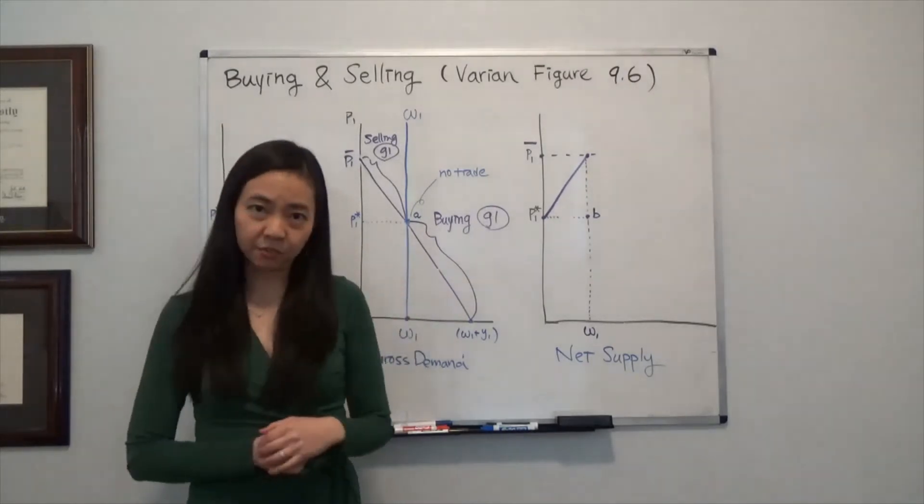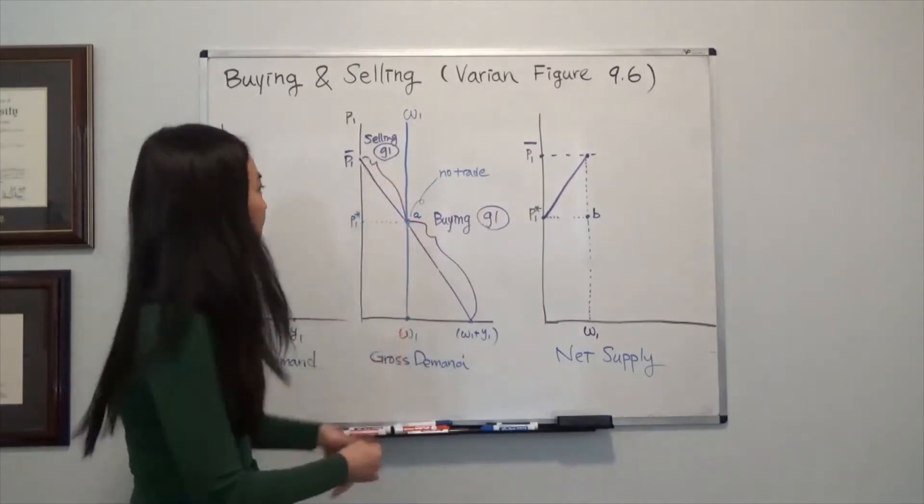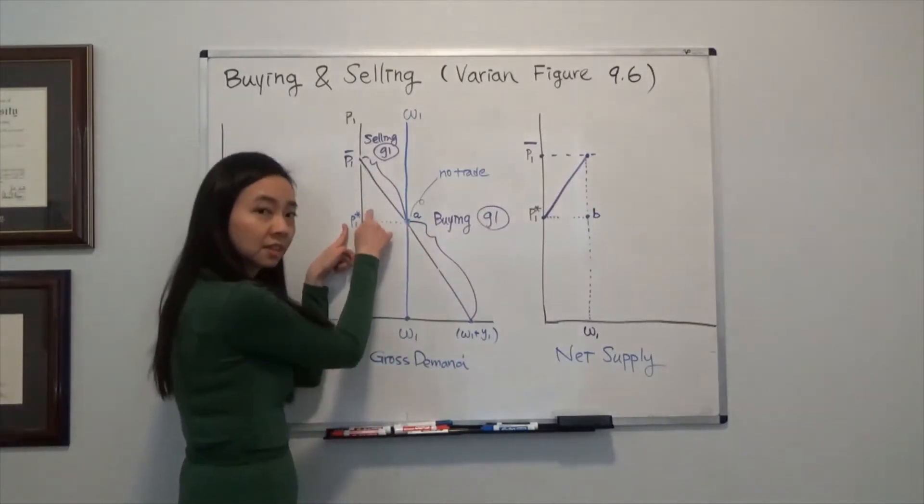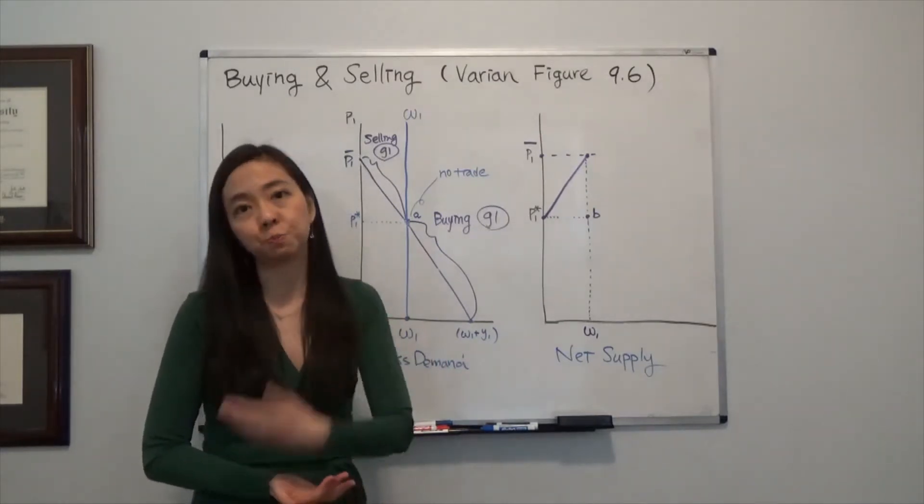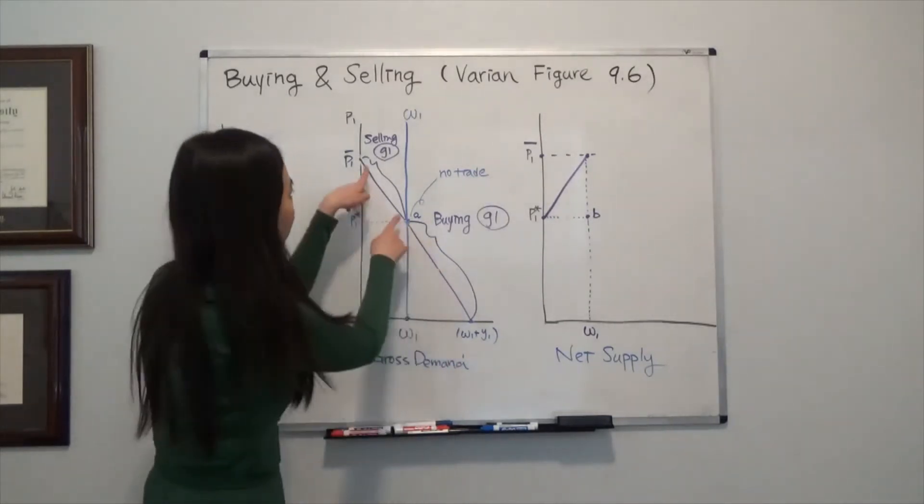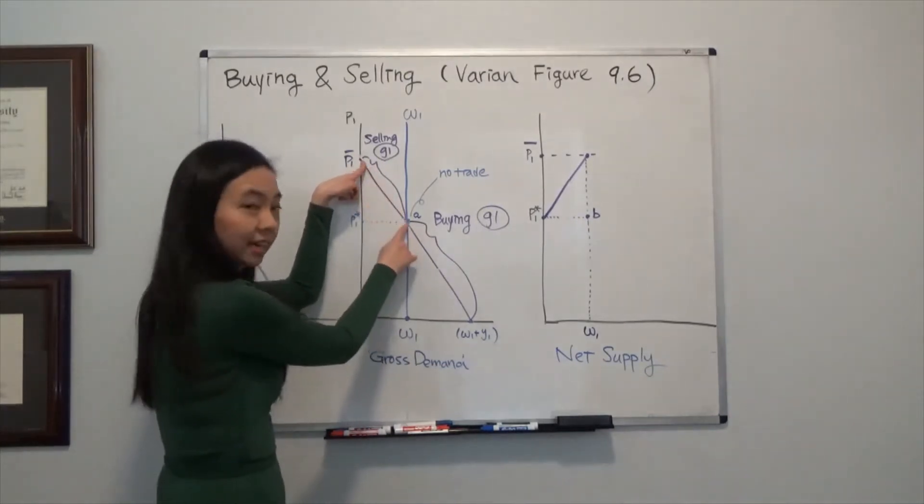But if the price of Good 1 has gone up, say the price is higher than P1 star, that means it makes sense for me to sell Good 1 and to buy more Good 2. So I'm selling Good 1. I'm in this area.